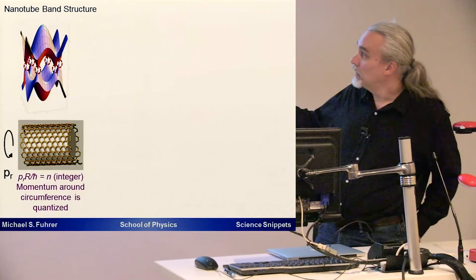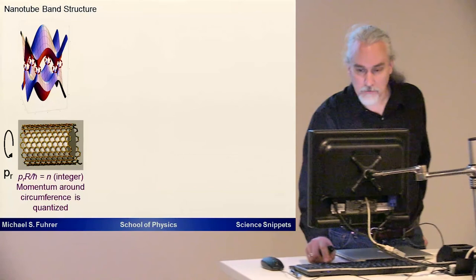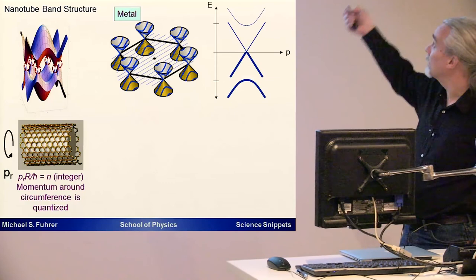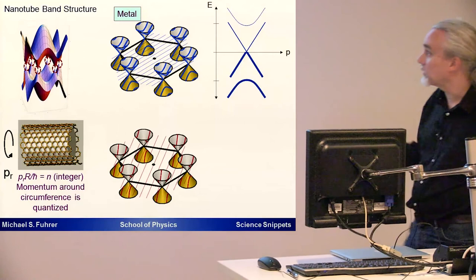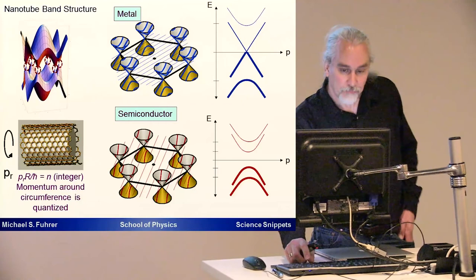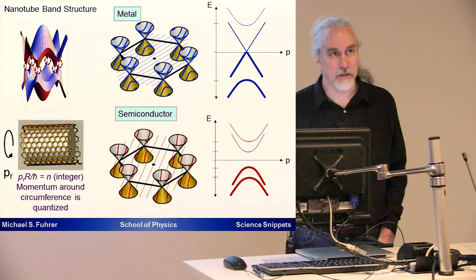In quantum mechanics, what that means is that we take this band structure and one of the directions of the momenta becomes quantized around the nanotube. That just takes these cones that we talked about and slices them. Some of these slices of the cones—these conic sections—will be straight lines if they go through the point of the cone, and those are metals. Some of the slices, if we have a different structure for our nanotube, will miss that point and we'll have a semiconductor with an energy gap.